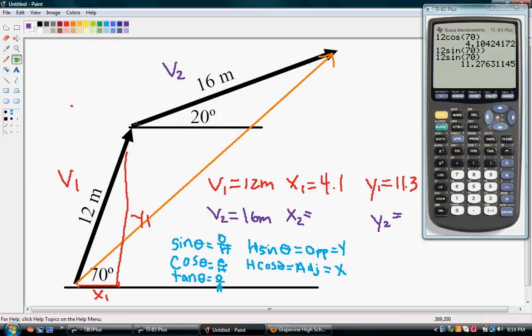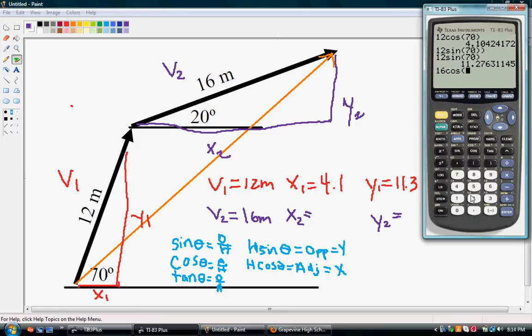And now we need to solve for x2 and y2. So, we'll do that by using our hypotenuse 16 meters and our theta 20 degrees. So, we plug in 16 cosine 20 for our x. We get 15. And then we plug in 16 sine 20 to find our y, we get 5.5.